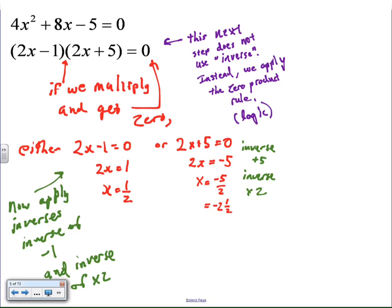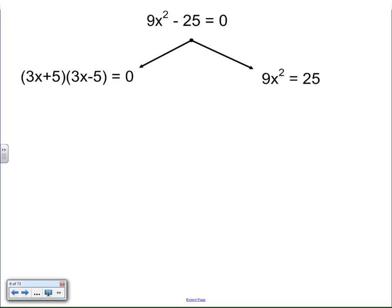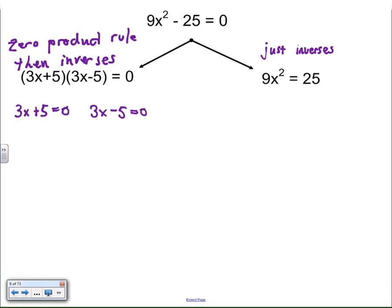So once again, inverse operations are a great way to solve equations, but not all equations can be solved that way. I like this equation because it gives us the opportunity to explore two methods of solving the same equation. In one case, I can factor the expression on the left and then use the zero product rule and inverses, and on the right-hand side, I could just go straight the inverse route. So here I inverted subtract 25 and added 25 to both sides. So first to explore the zero product rule then.